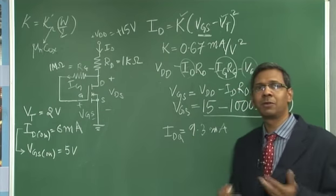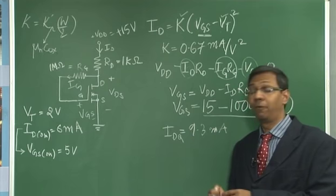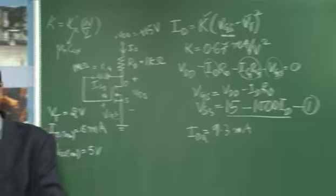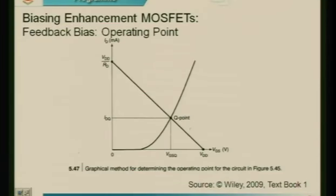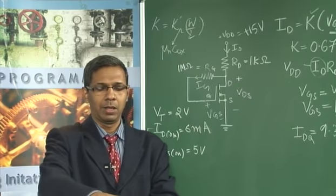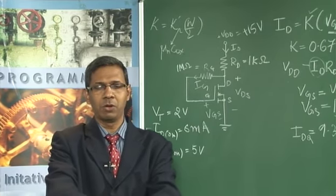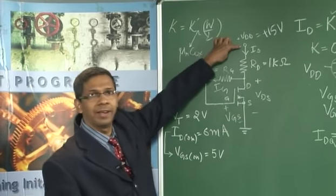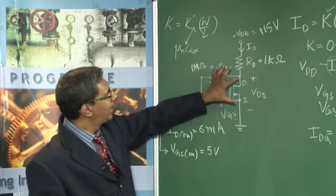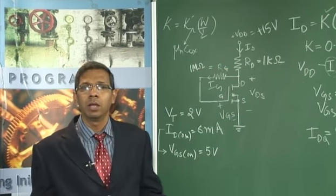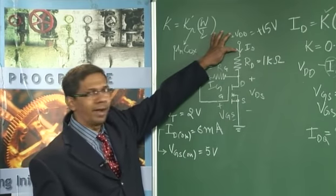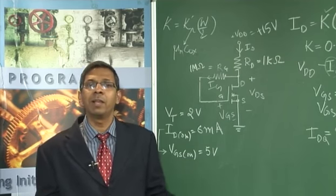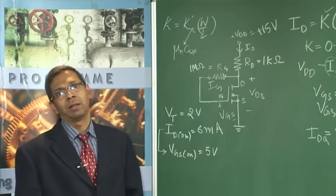The Q point also requires VGS and VDS_Q. Writing KVL for the output loop: VDD minus ID·RD minus VDS equals zero. Solving for VDS: VDS = VDD − ID·RD. VDD is 15 V, ID is 9.3 mA, and RD is 1 kΩ. Substituting: VDS = 15 − 9.3 = 5.7 volts. That is VDS_Q.